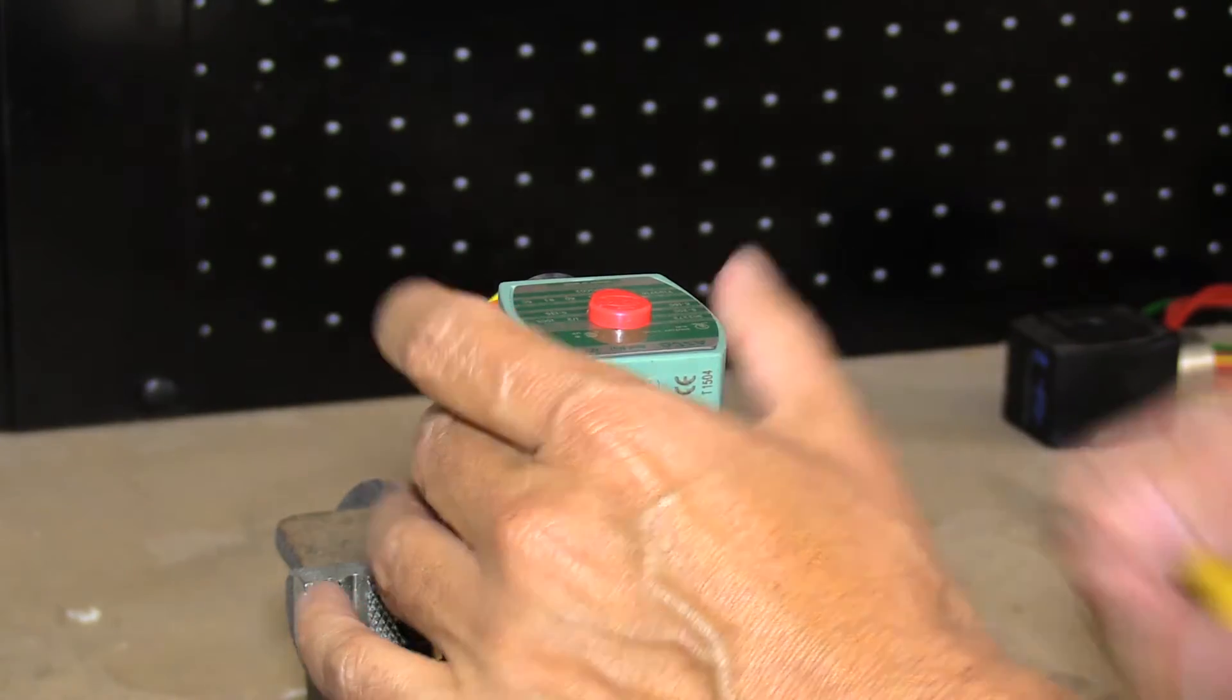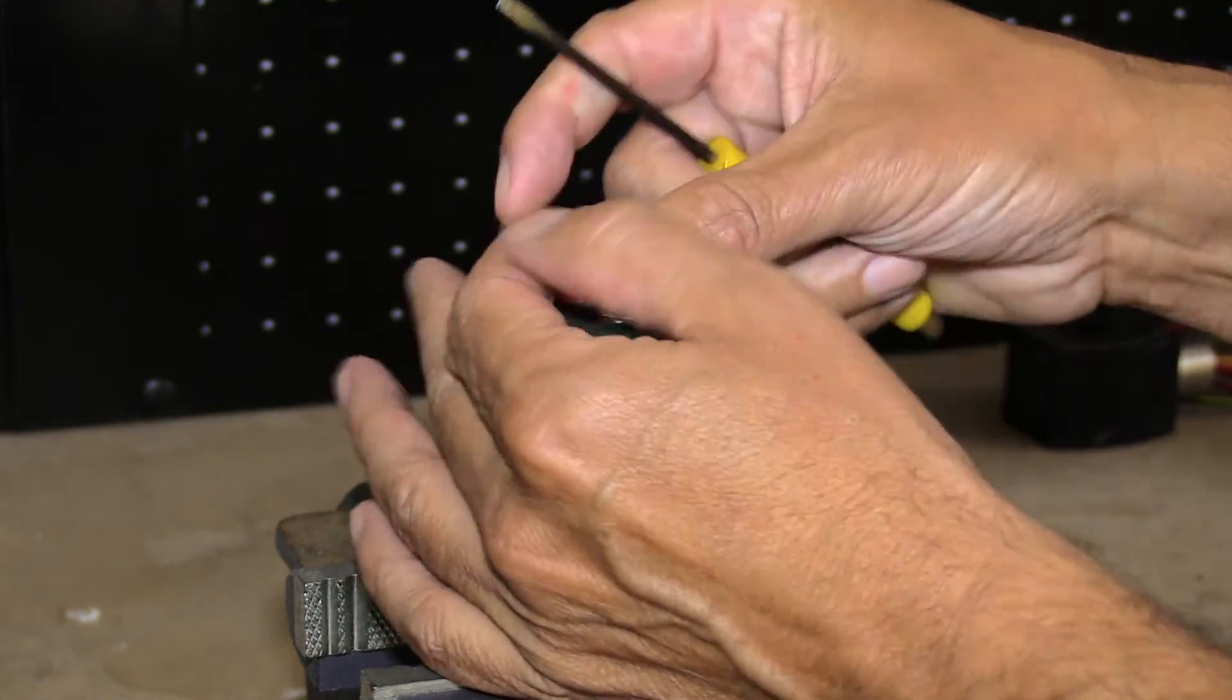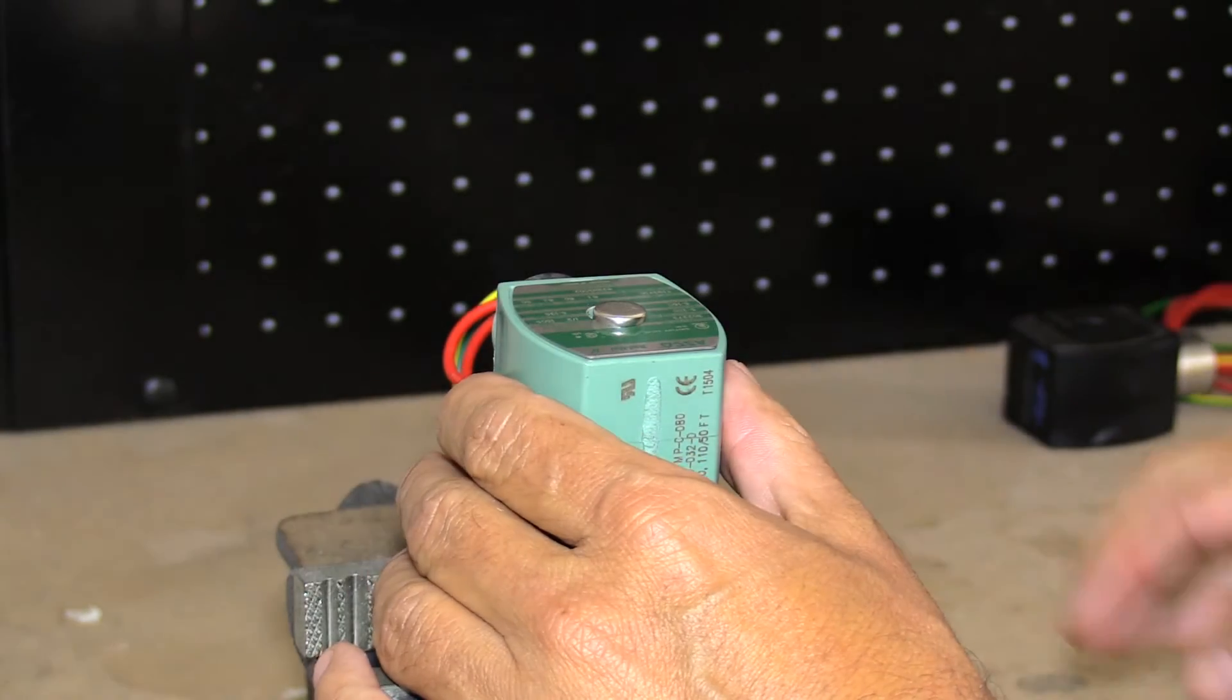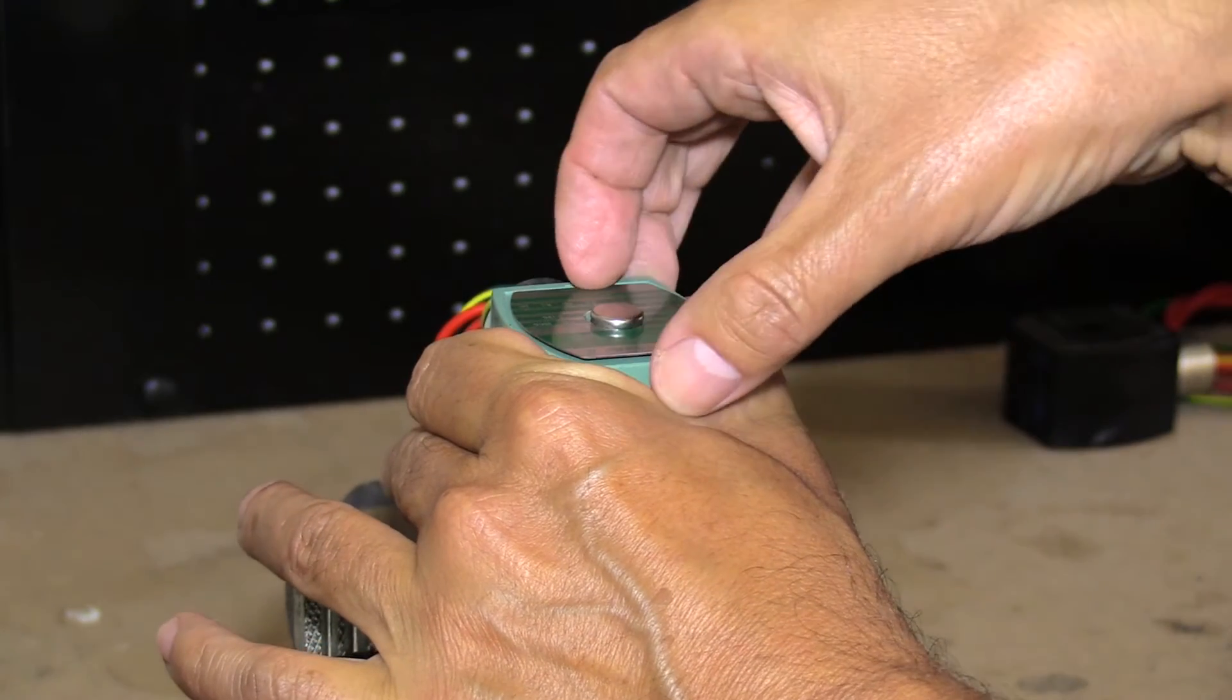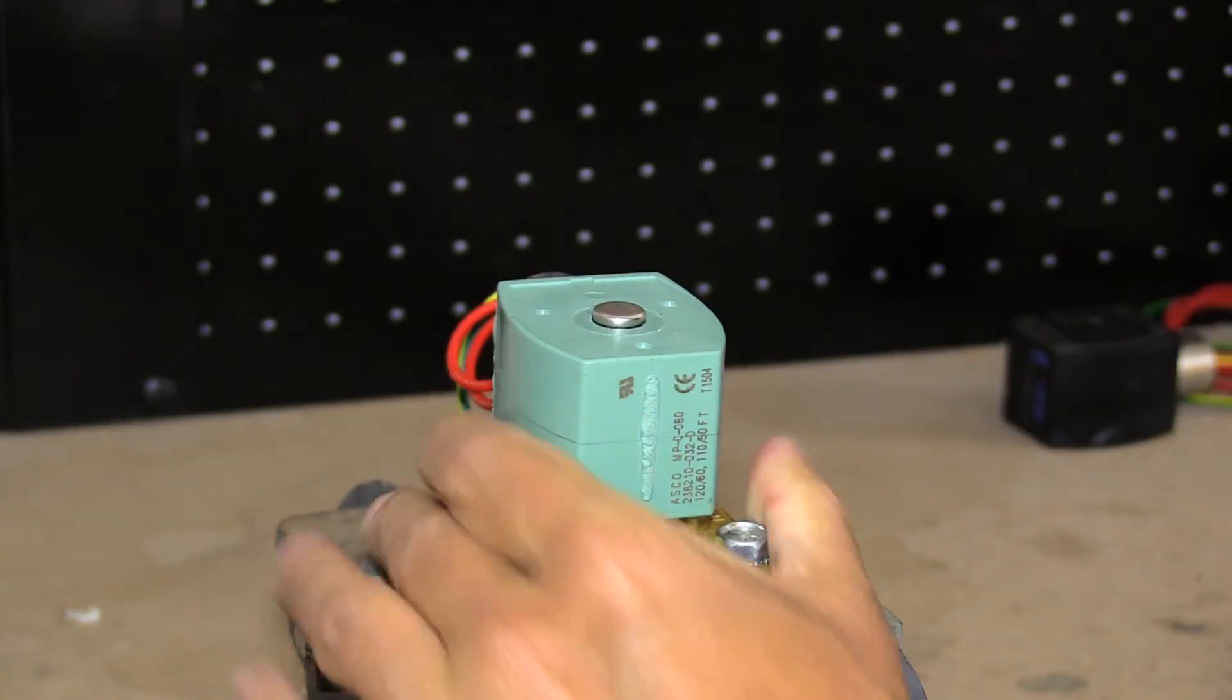To replace an ASCO solenoid valve coil, first we remove the red cap. The trick to this is to push down on the coil. It's spring-loaded, so if you don't push down, it makes it difficult to remove.